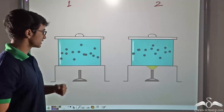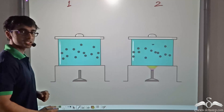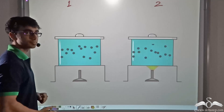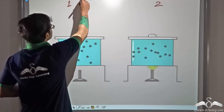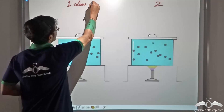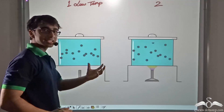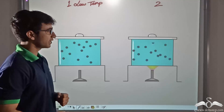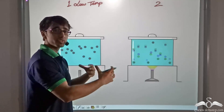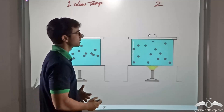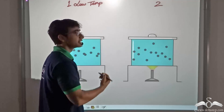In the first vessel you find that the molecules are moving slowly because it is not being heated, so it is at a lower temperature. In the case of the second vessel, after being heated, the molecules are moving about very rapidly, and since it is being heated it is at a higher temperature.